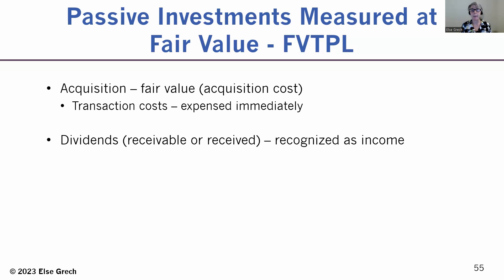Why? Because dividends are legally receivable when they're declared. So the investor has to recognize the receivable as soon as they're declared. When the cash is received, the dividend receivable is credited, making it zero, and then cash is debited to recognize that it's been received.